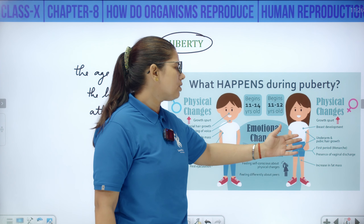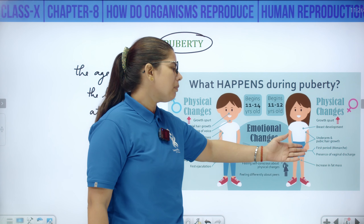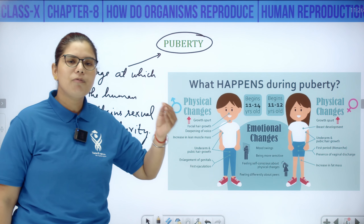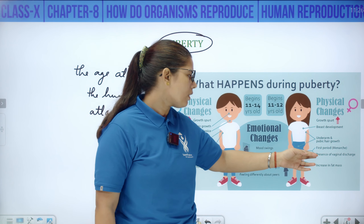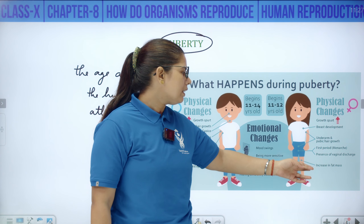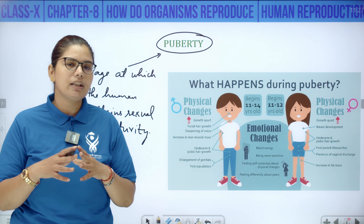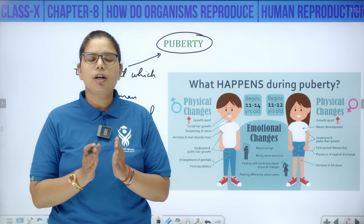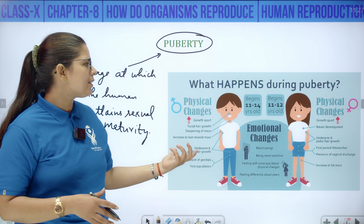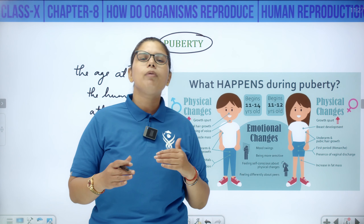In girls, the changes include: breast development and enlargement; underarm and pubic hair growth; first period — that is menarche, the onset of the menstrual cycle; presence of vaginal discharge; and increase in fat mass in certain parts of the body, especially in the lower pelvic area, the waist region, and thigh region.